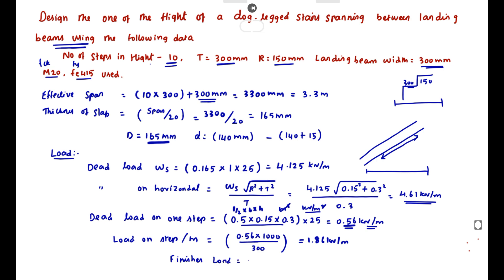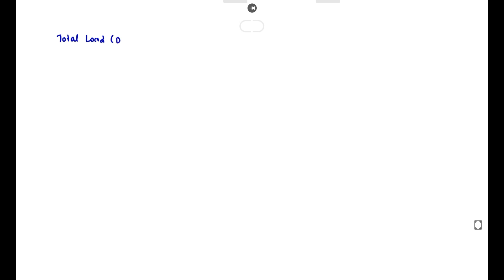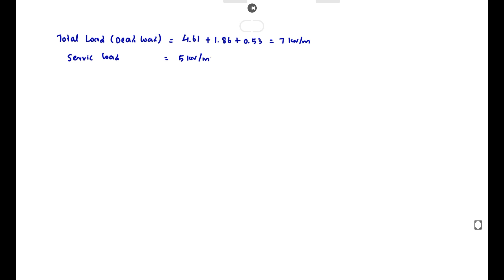The finishes load is taken as 0.53 kN/m. Adding all dead loads: slab load 4.61, step load 1.86, finishes load 0.53 — total dead load equals 7 kN/m. The live load (service load) is assumed as 5 kN/m². For 1 meter width, live load equals 5 kN/m.